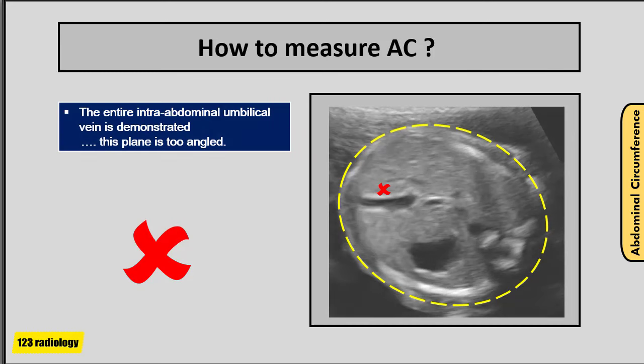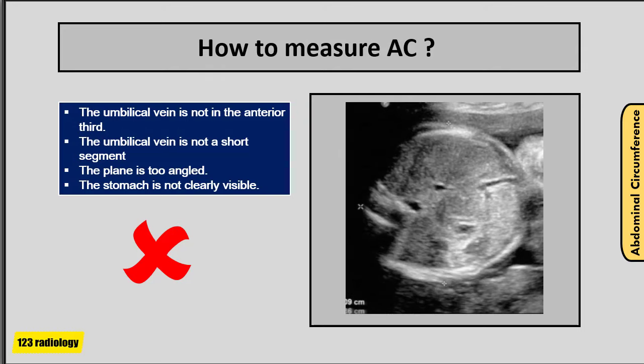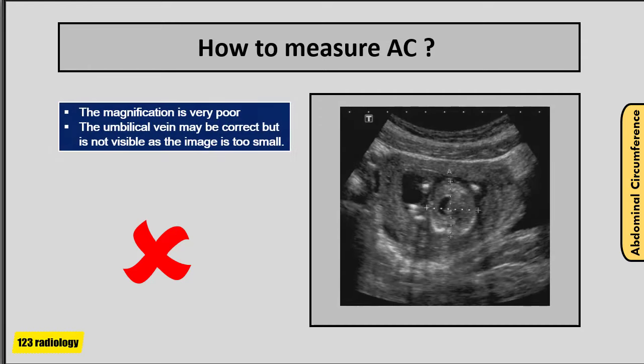Incorrect examples of abdominal circumference measurement: in the first, the entire intra-abdominal umbilical vein is demonstrated, meaning the plane is too angled, leading to incorrect estimation. In the second, the umbilical vein is not in the anterior third and is not a short segment — again the plane is too angled, and the stomach is not clearly visible. In the third example, magnification is very poor and the umbilical vein is not visible as the image is too small — all leading to incorrect abdominal circumference measurement.